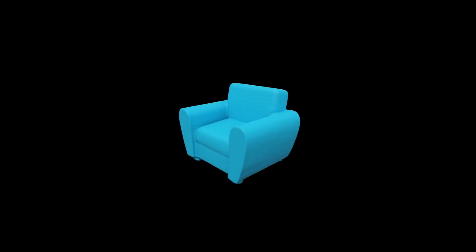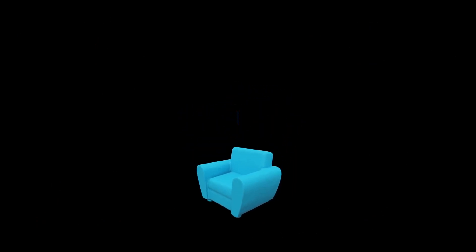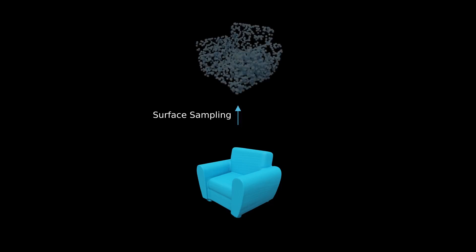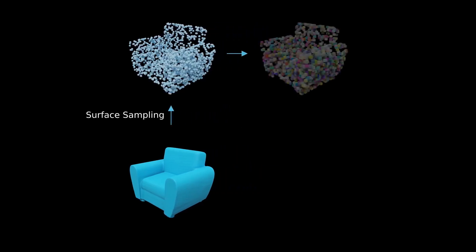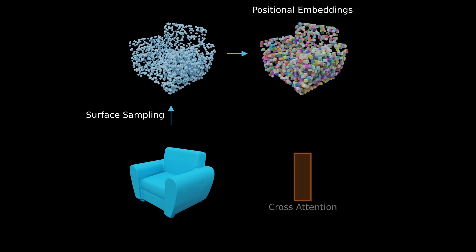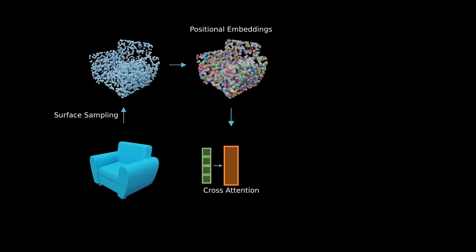Here, we visualize our shape autoencoding network. Given a shape, we first sample a point cloud on the surface. The points are then mapped to positional embeddings. We use a cross-attention module to encode the input as an initial set of latent vectors. This set of latents is further processed by a KL block and a series of self-attention blocks.